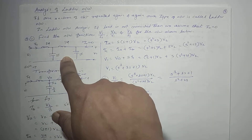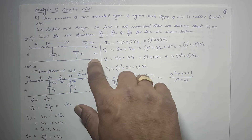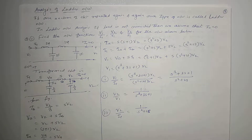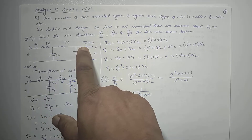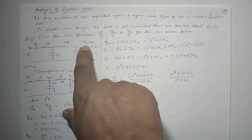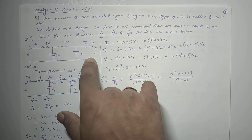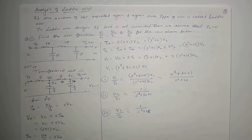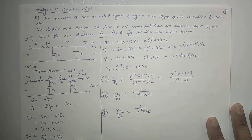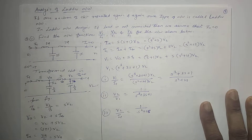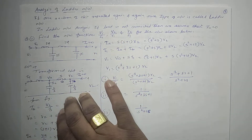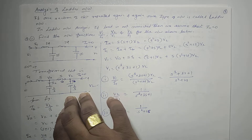In this ladder analysis, when the load has no connection, we have to assume I2 is zero. When there is no load connected on the output side, assume I2 is equal to 0. This is the first assumption you have to make in ladder analysis. Then you have to obtain the transform circuit — convert this circuit into the transform domain, that is, the Laplace domain.